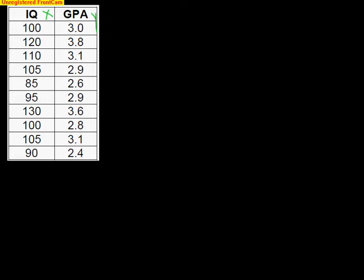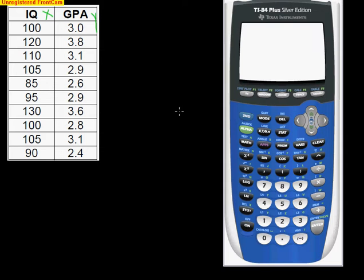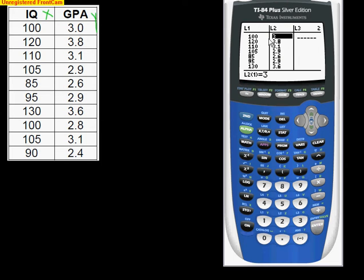So we want to see if we can take a look at a scatterplot of this. One way we typically do this is best to use our calculator here. The first thing we're going to do is hit stat, go to edit, and we're going to enter in list one would be our IQ, list two would be the GPA. Double check you type everything in right, you don't want to type something in wrong and mess everything up.